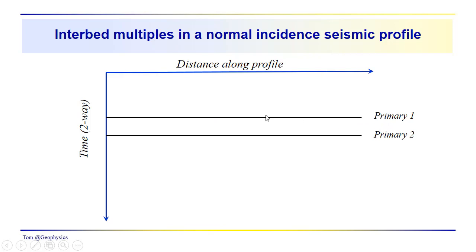seismic trace representation. And we can see two primaries here, primary one, primary two. And now, this layer, we have our primary coming up as a reflection from the base. But we know that we're going to get, we could get,